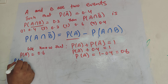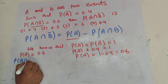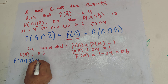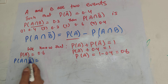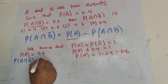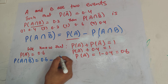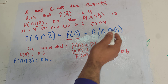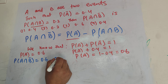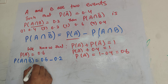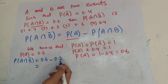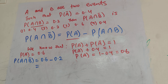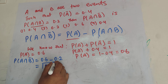So the probability of A intersection B naught should be equal to probability of A, which we calculated as 0.6, minus probability of A intersection B, which is given as 0.2. So this comes out to be 0.6 minus 0.2, which equals 0.4. So 0.4 should be the correct option.